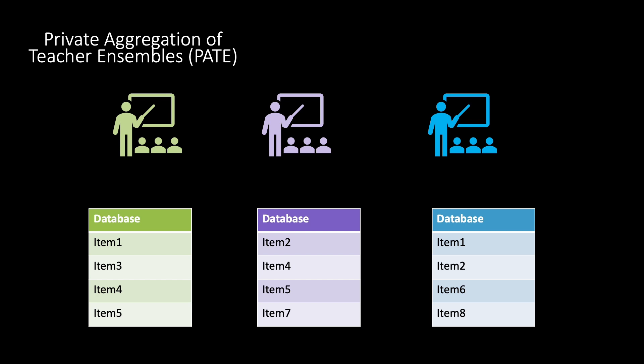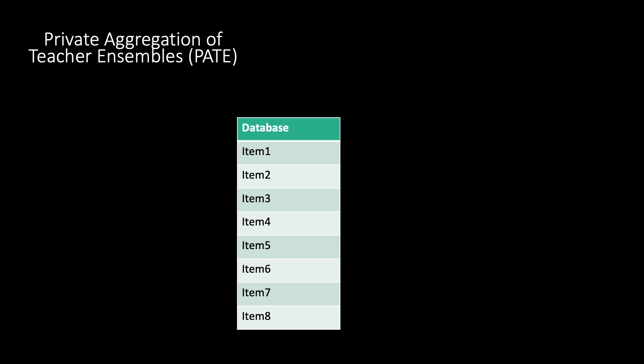During the training of each teacher model, noise is added to the training labels. This noise addition is typically achieved using a noise distribution, such as we have previously discussed, Laplace or Gaussian. The predictions from the teacher models are aggregated using techniques such as voting or averaging to produce a final prediction.